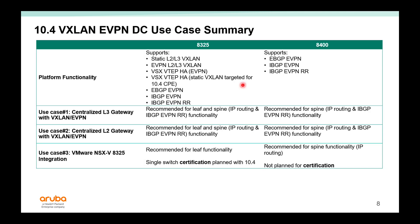Let's summarize the 10.4 VXLAN EVPN data center use cases. The H325 supports both static and EVPN for both layer 2 and layer 3 VXLAN. If you want to do VSX Logical VTAP, it's only supported with EVPN initially — we do plan to support HA-VSX with static VXLAN in a future maintenance release. H325 supports both EBGP and IBGP EVPN.